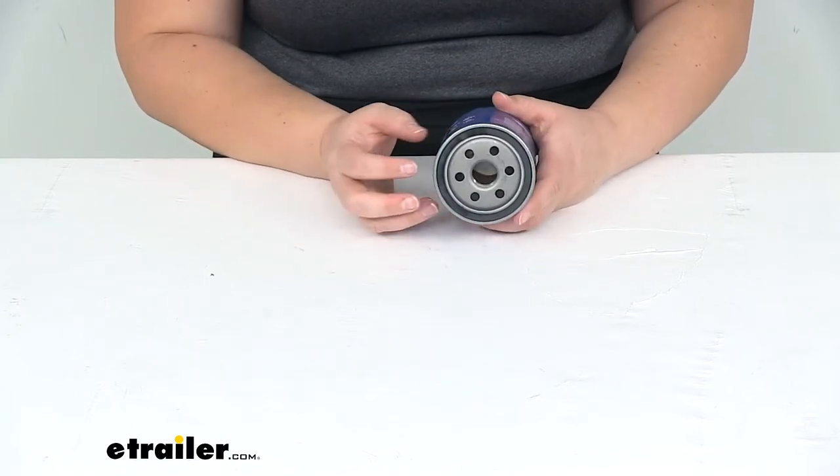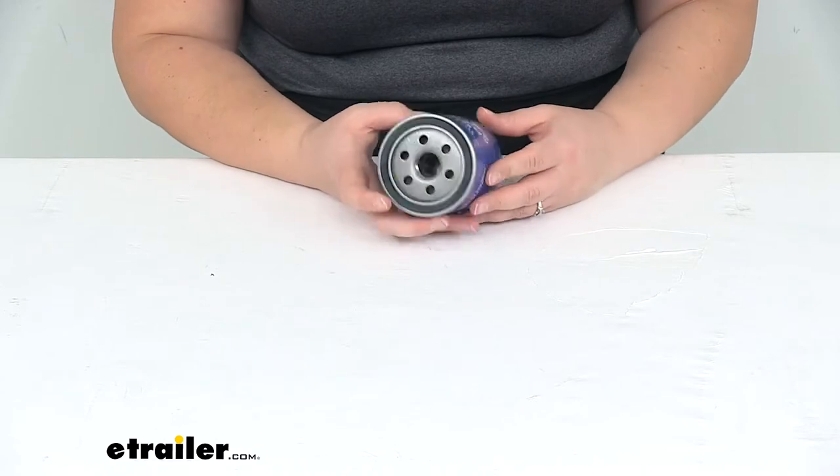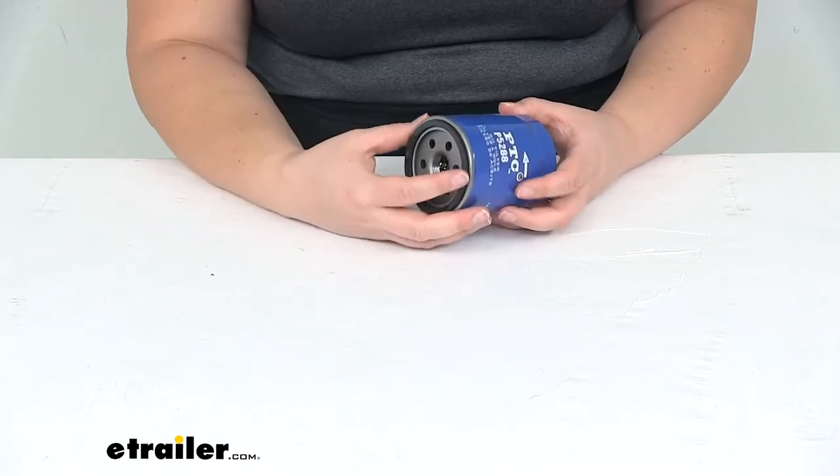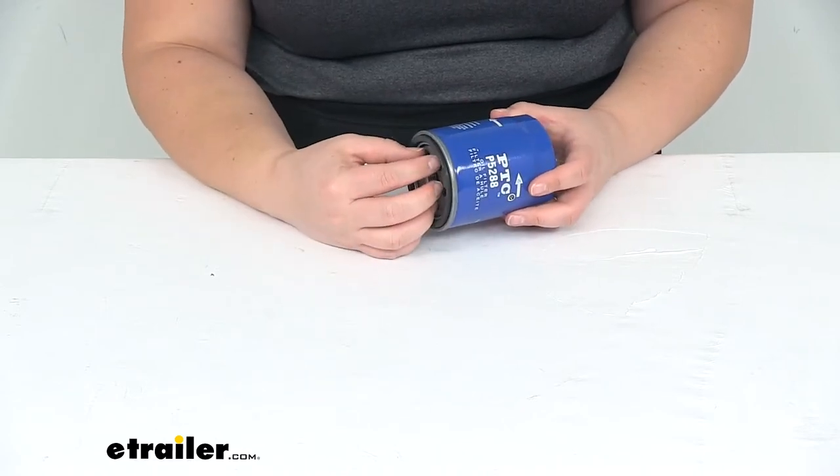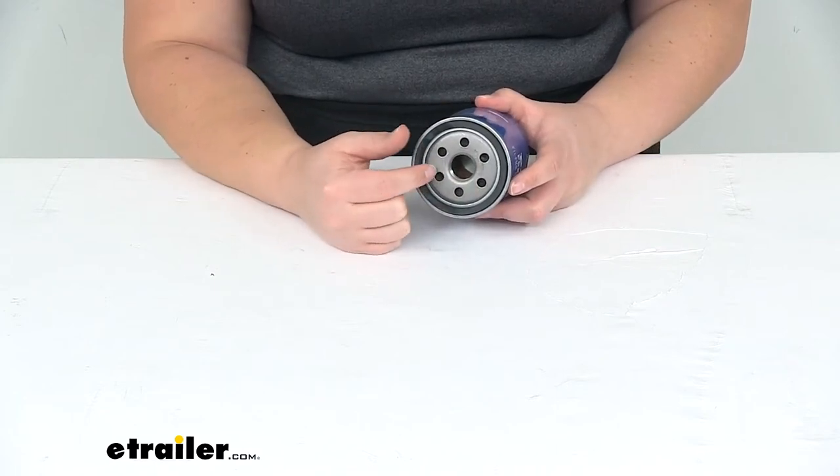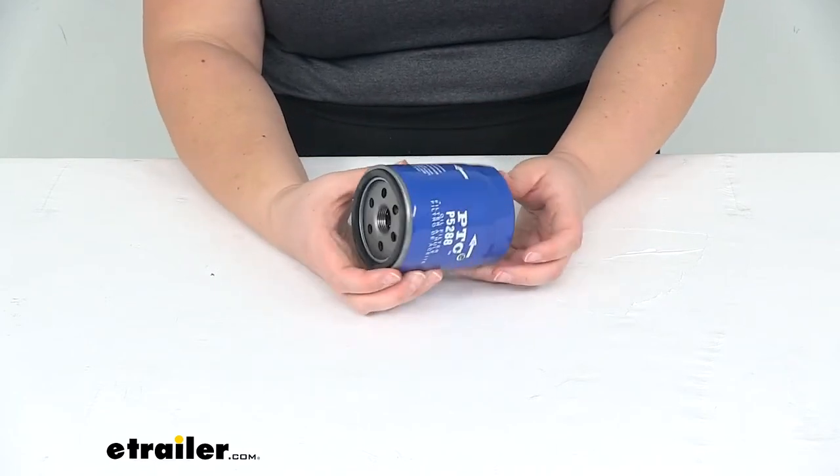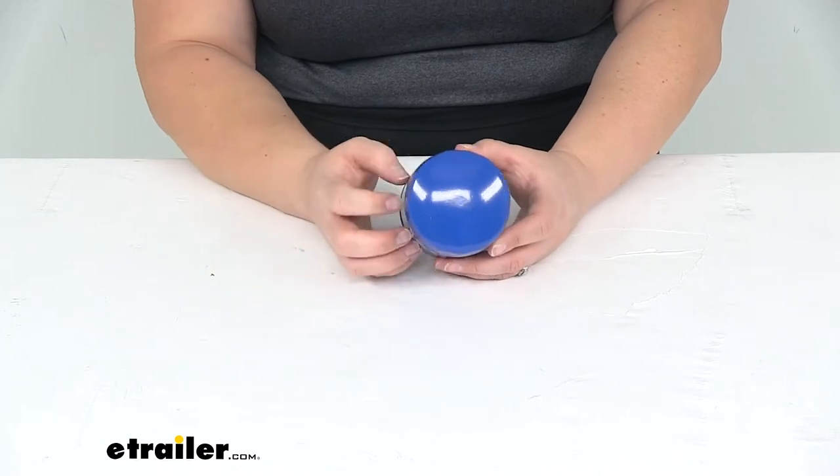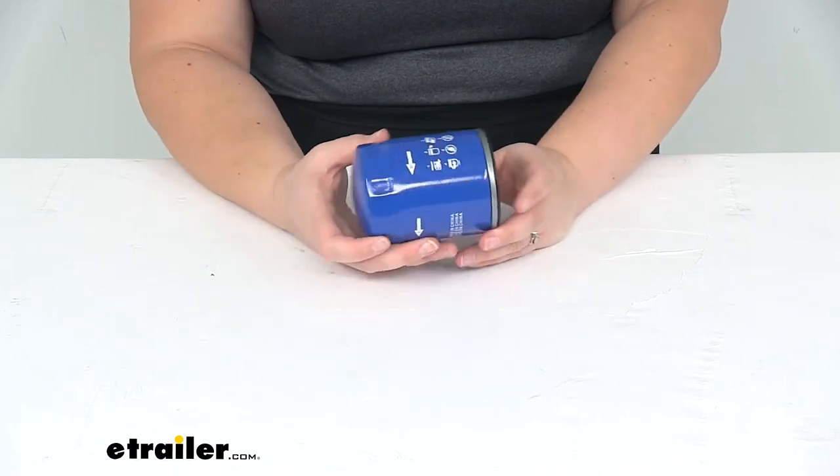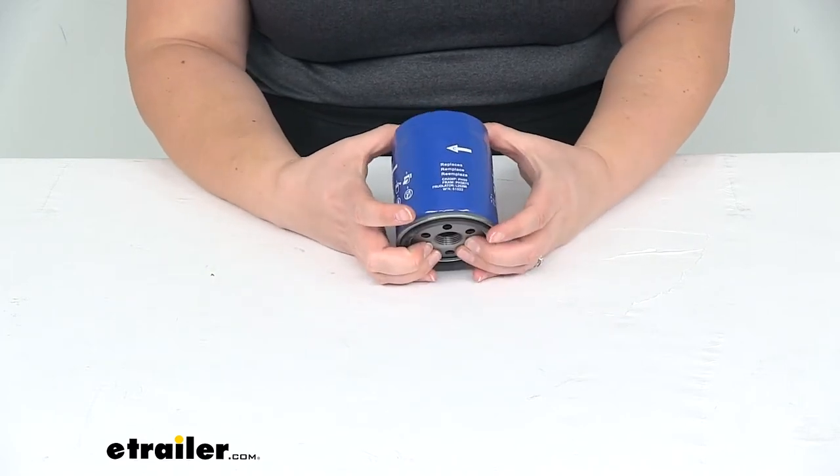It's going to be made of a dense cellulose and glass blended media to provide that circulation and still filter out any of those contaminants. It's going to have multiple holes in there to effectively filter out any of those things, and then it's capped with metal on both ends to make sure that it's going to be very durable for a long time.